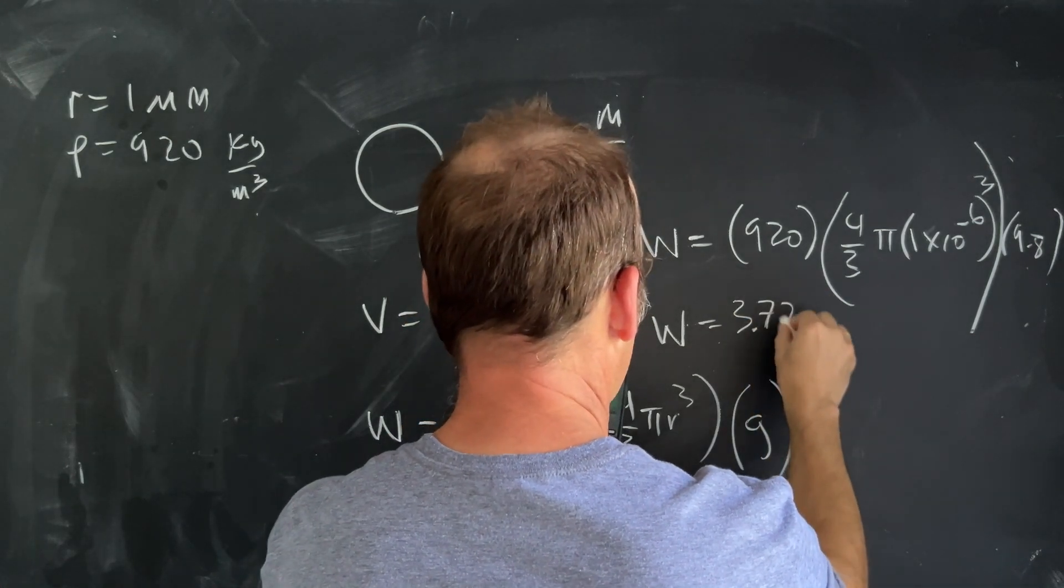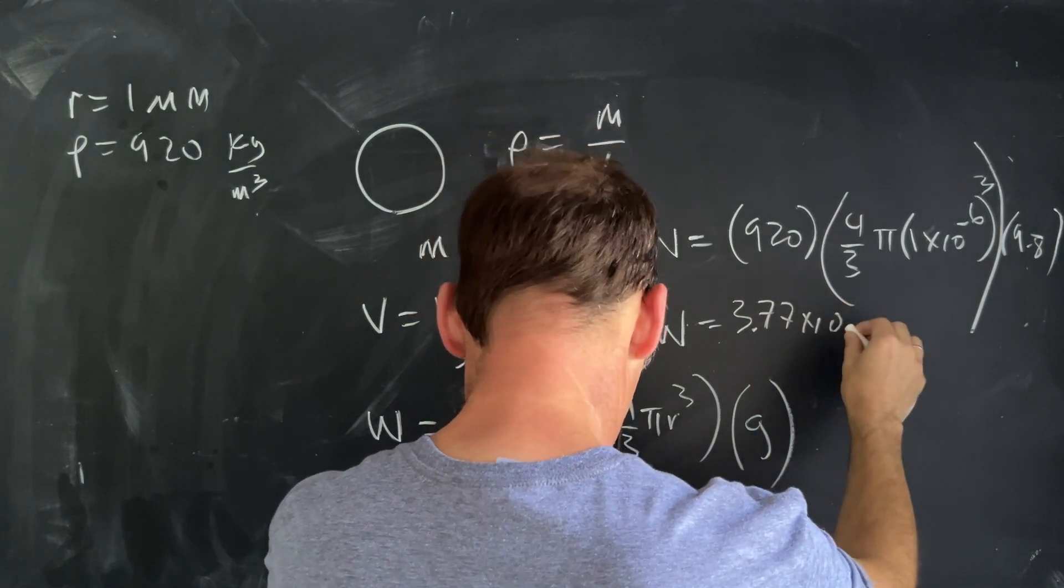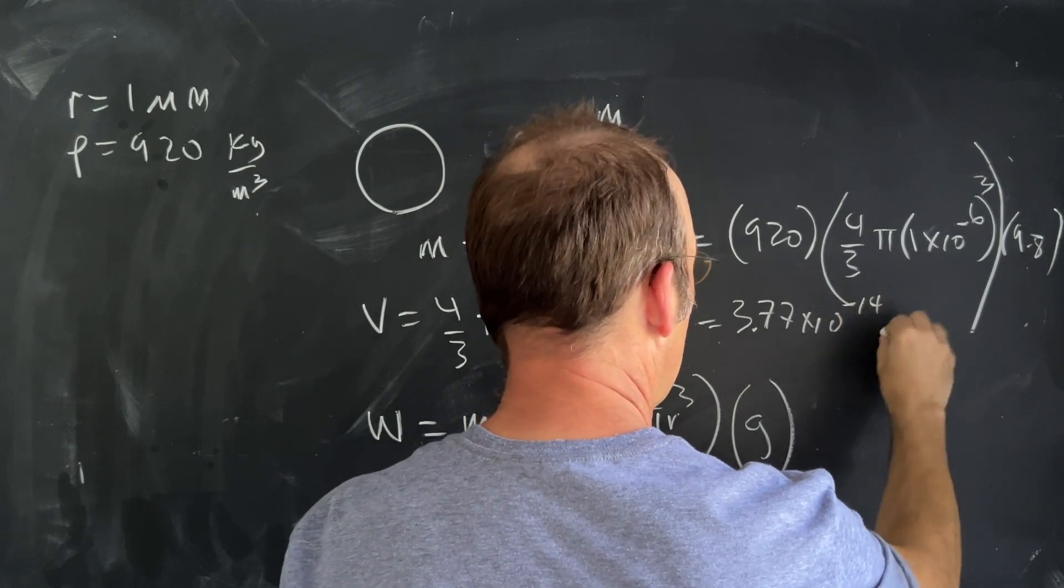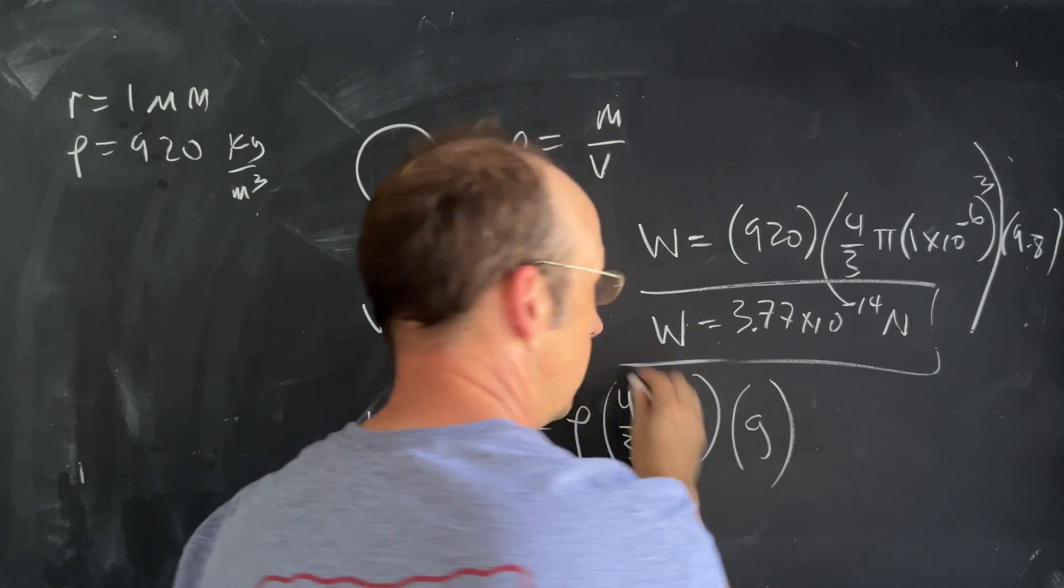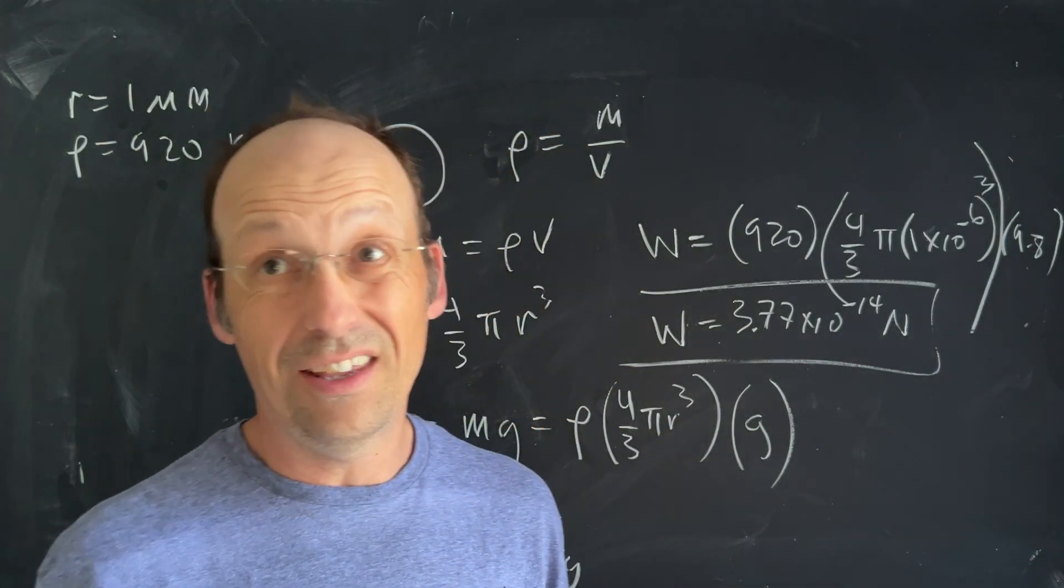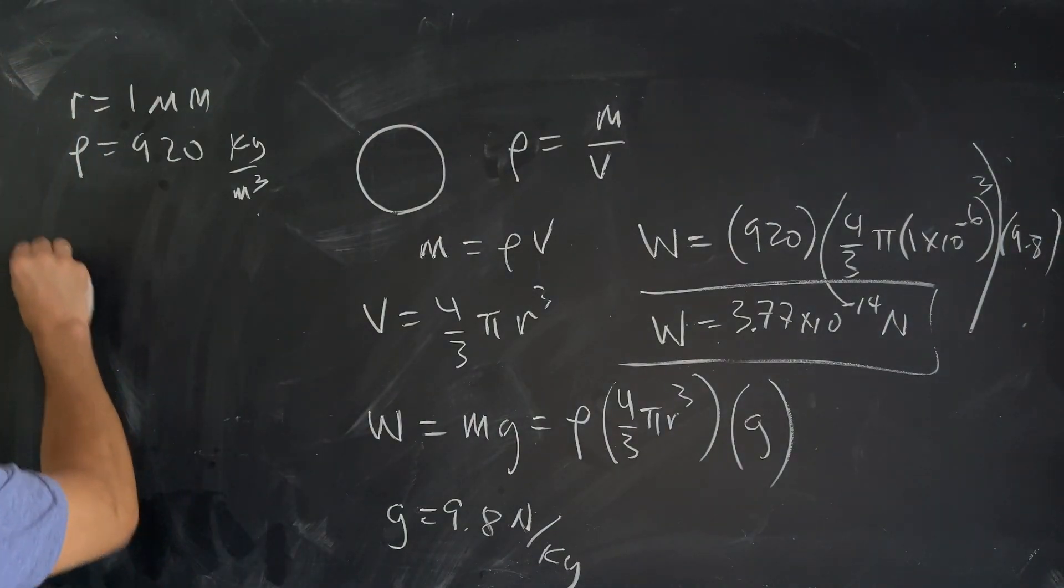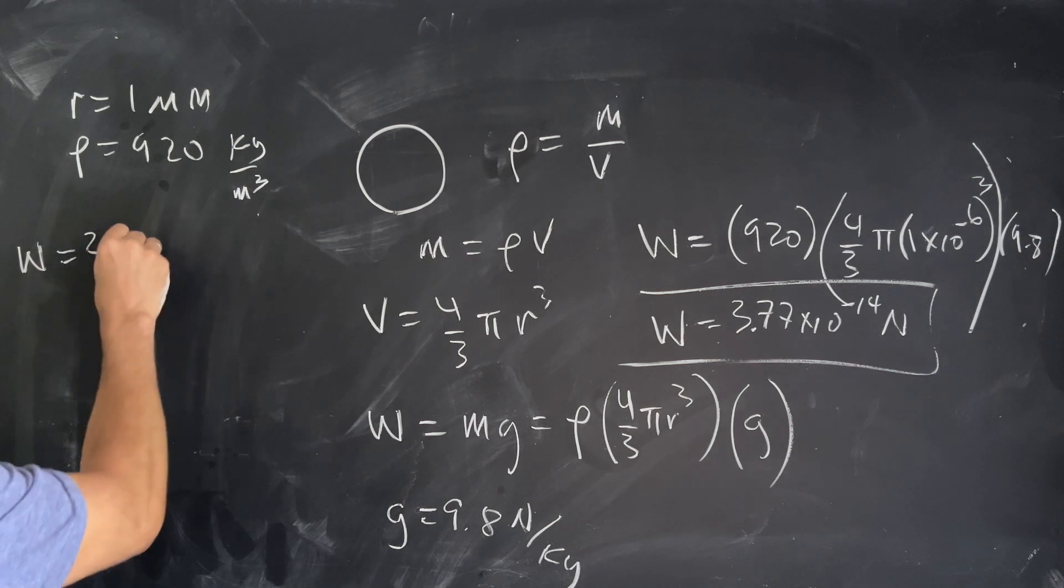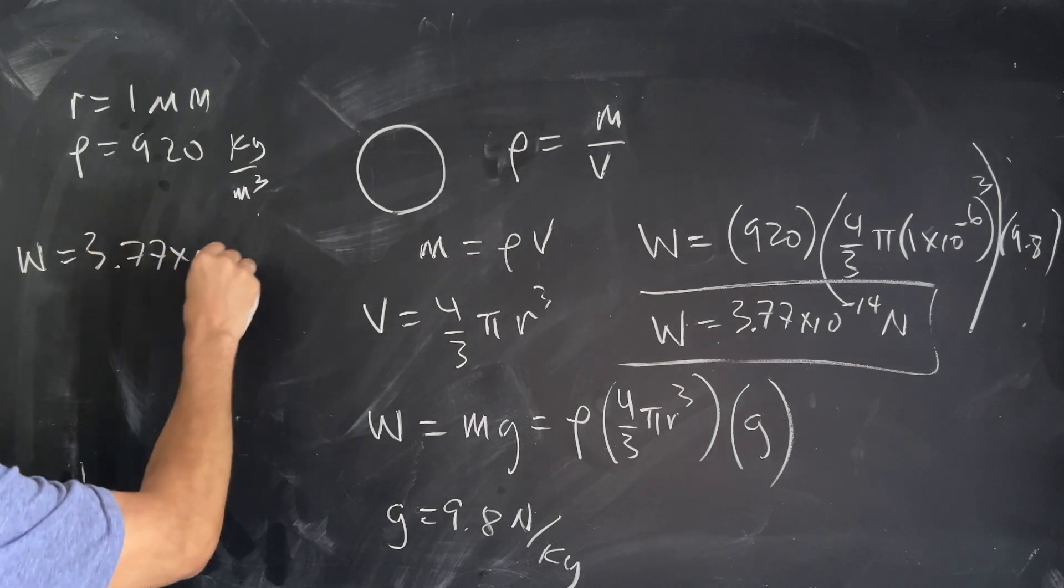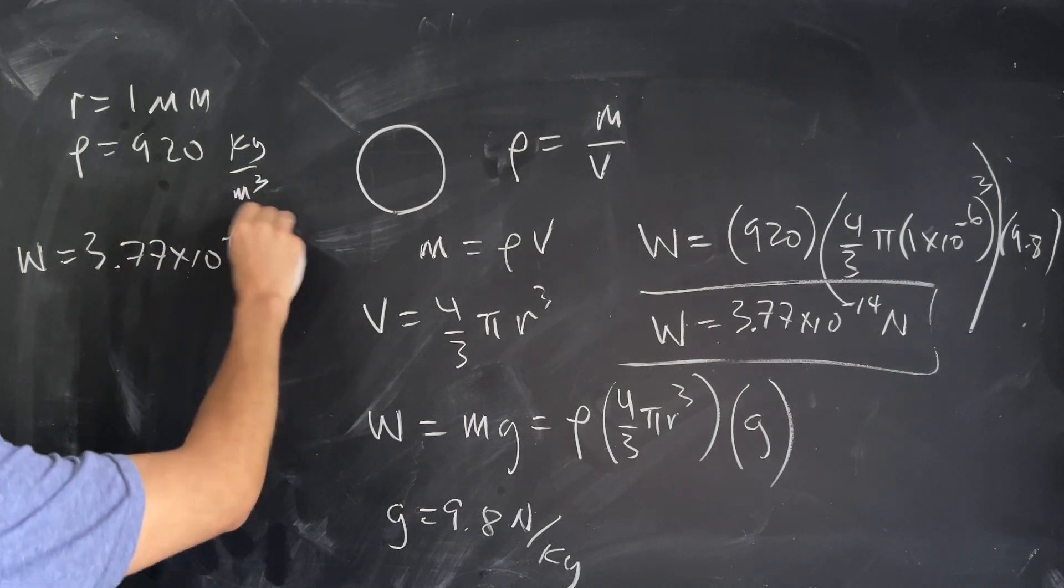3.77 times 10 to the negative 14 newtons. Again it's not really an electric field question for the first part but we do need that value. Weight: 3.77 times 10 to the negative 14 newtons.